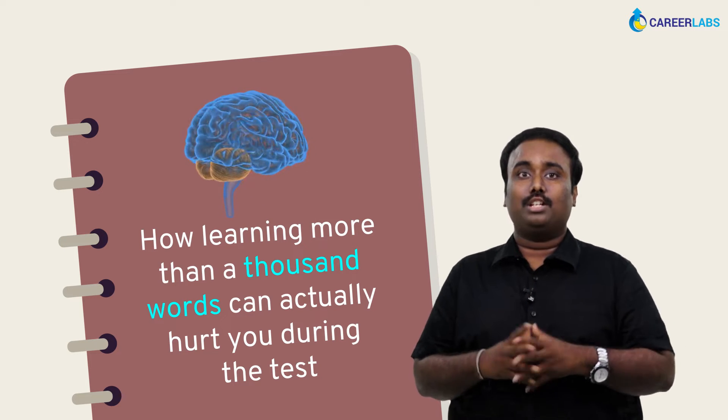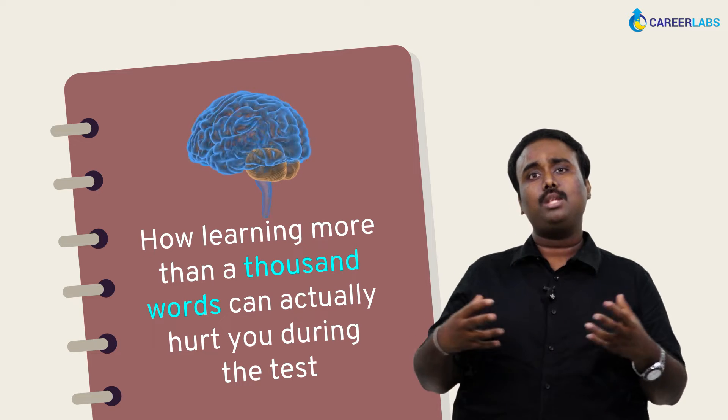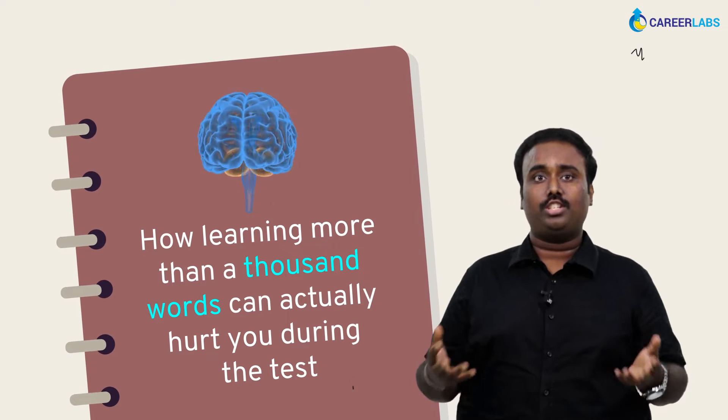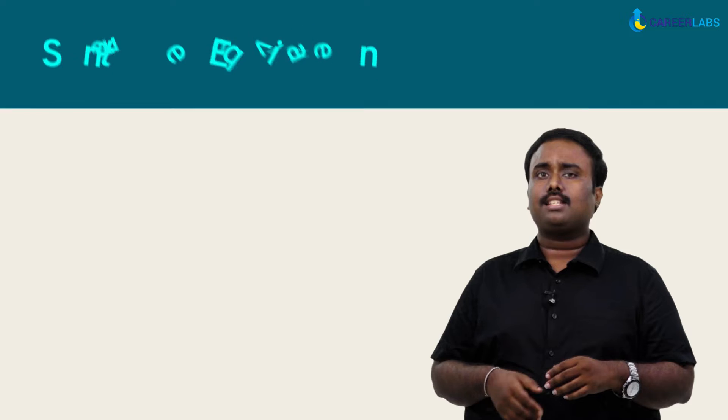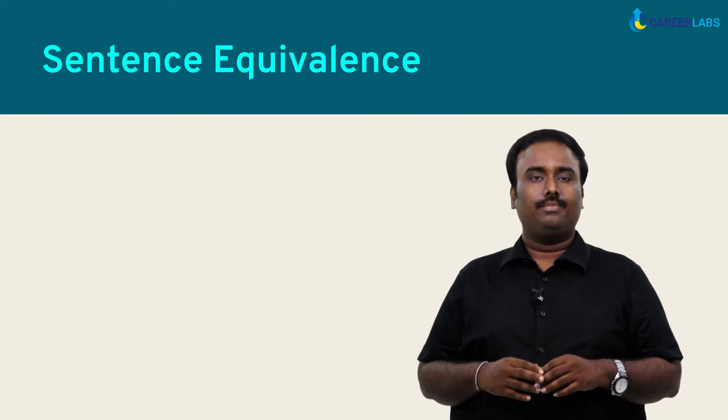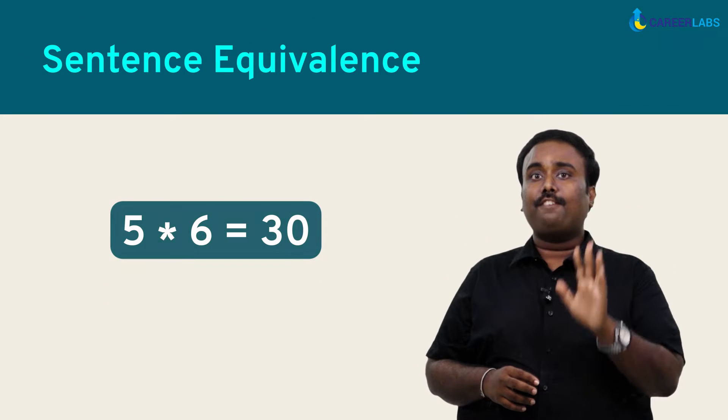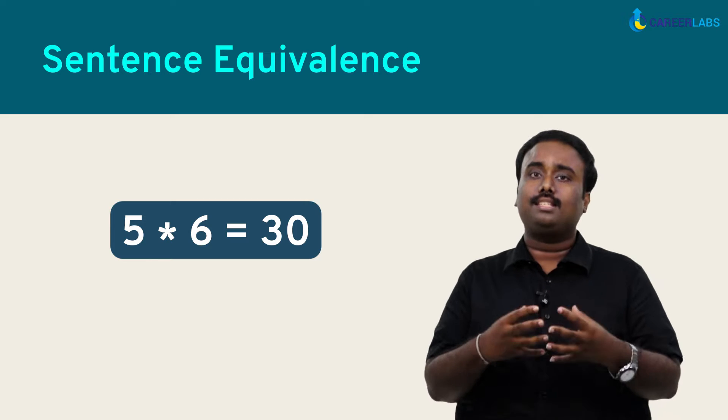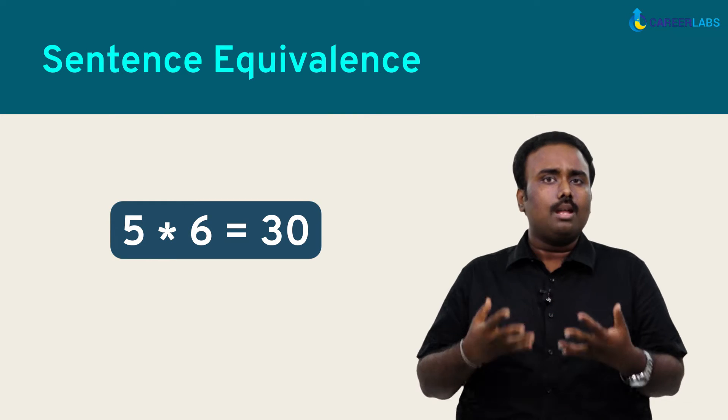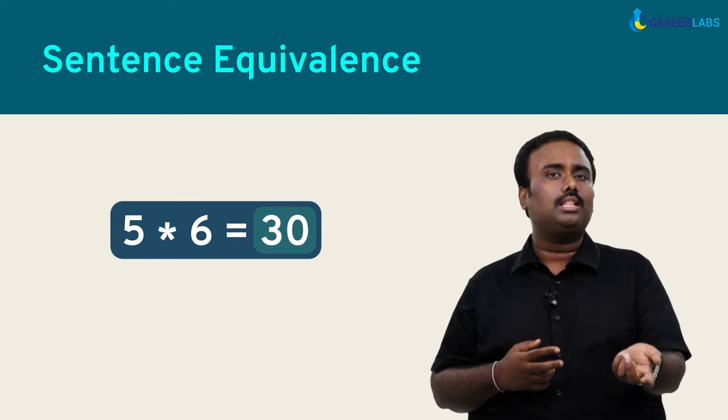I'm going to break down the verbal section for you in terms of how many words are tested on each question type. First things first, let's start with sentence equivalence. On average, there are 5 sentence equivalence questions with 6 options each. So the total number of words tested here are about 30 or so.